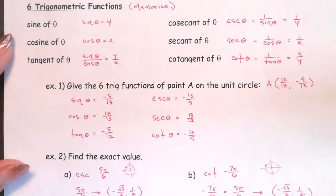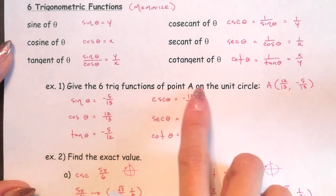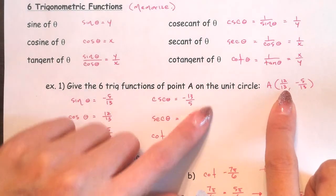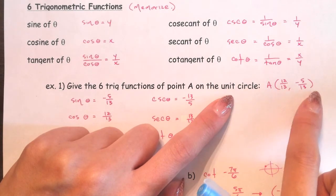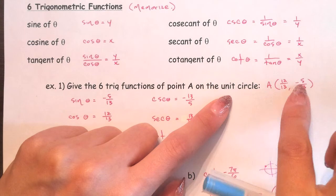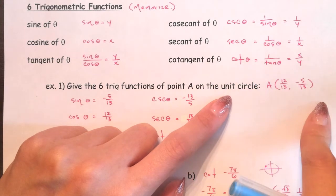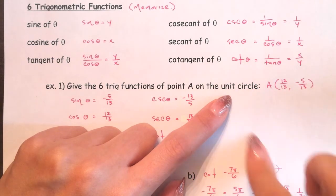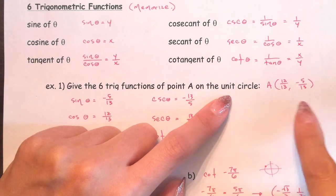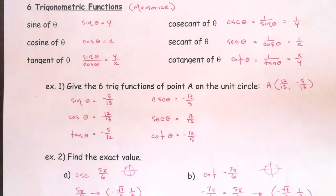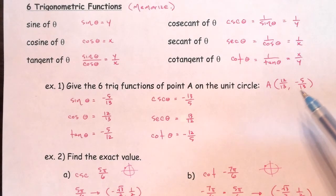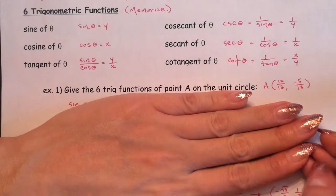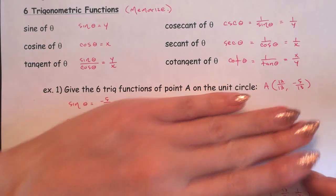For an example: give the six trig functions of point A on the unit circle. They give you a point and say it's on the unit circle. If you draw this as a triangle, you'd see it's a right triangle — a 5, 12, 13 triangle. When you square both coordinates and add them you get 1, because A squared plus B squared equals C squared. So it is a right triangle and it is on the unit circle.